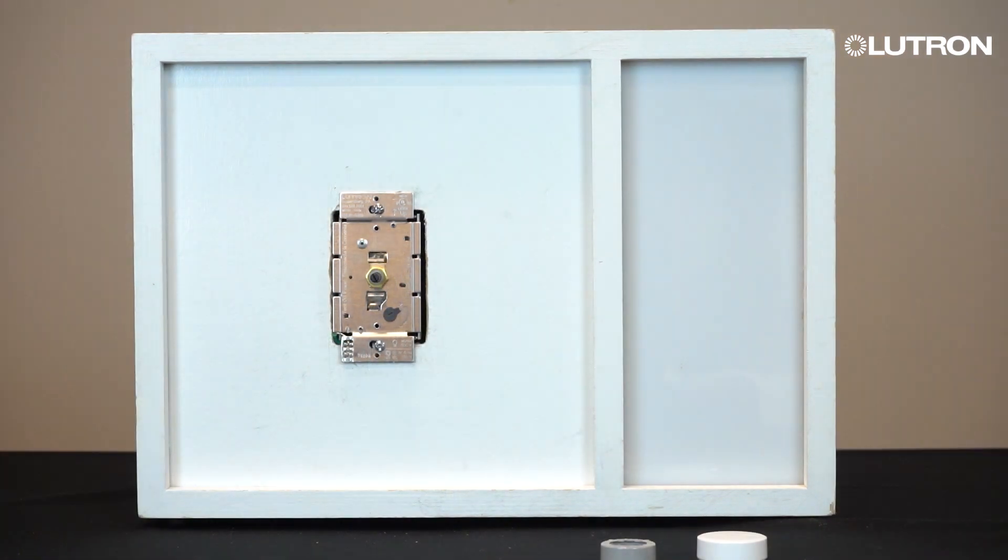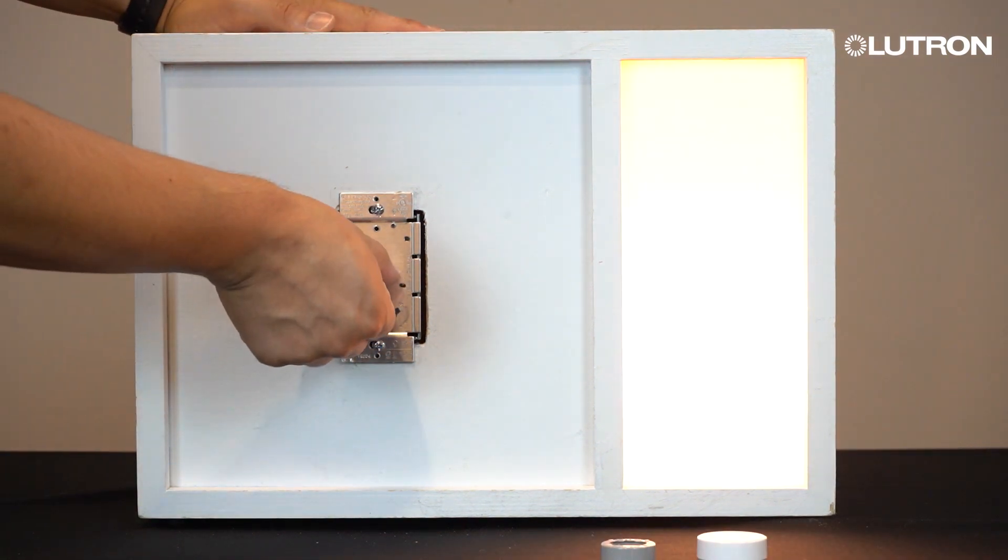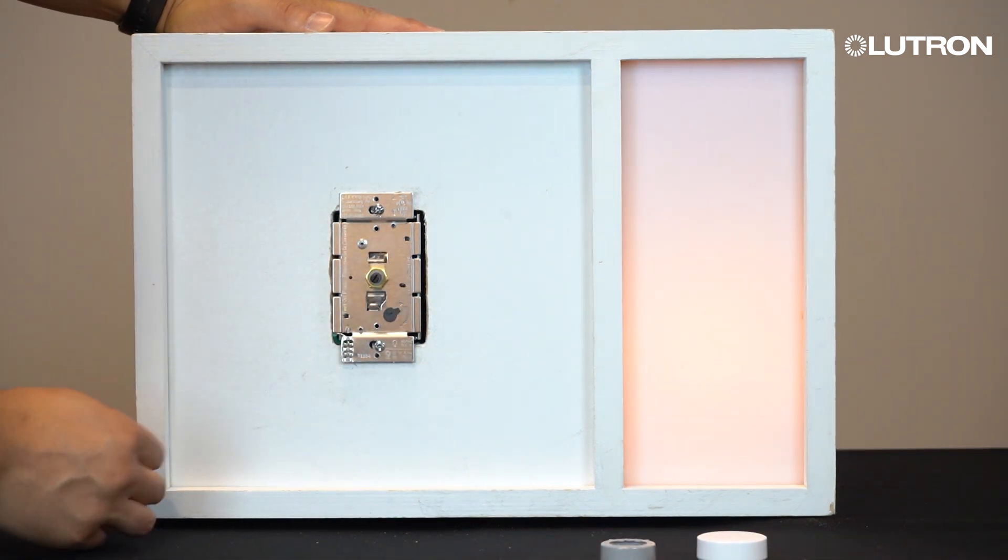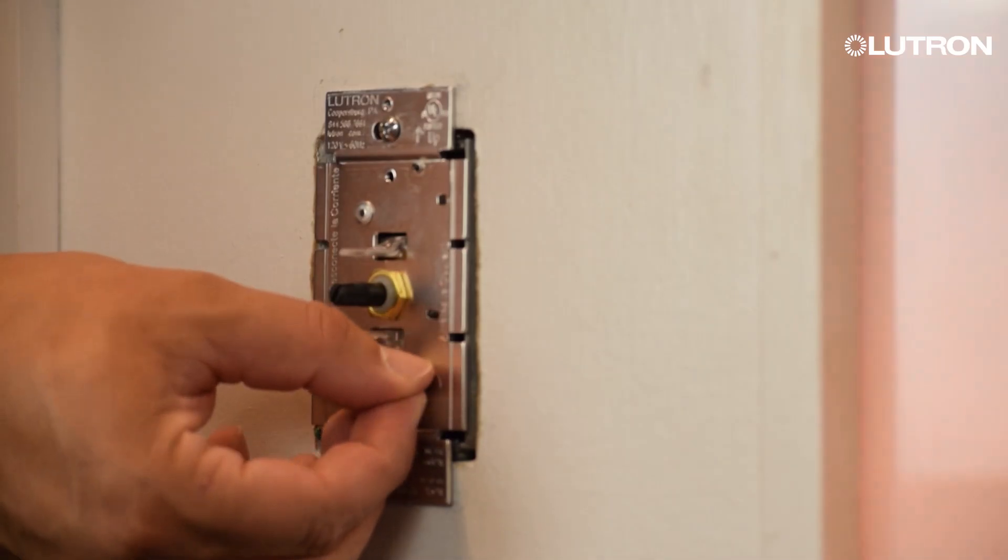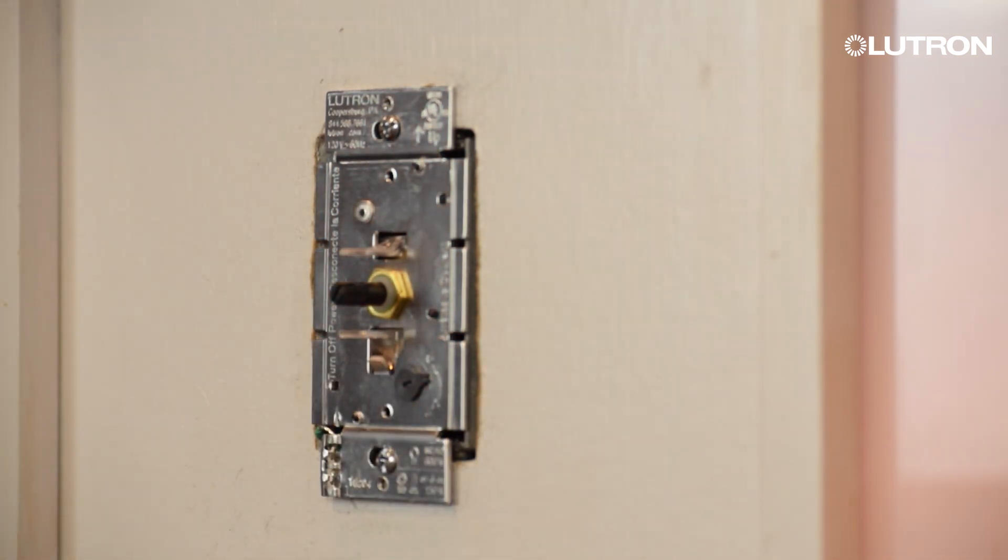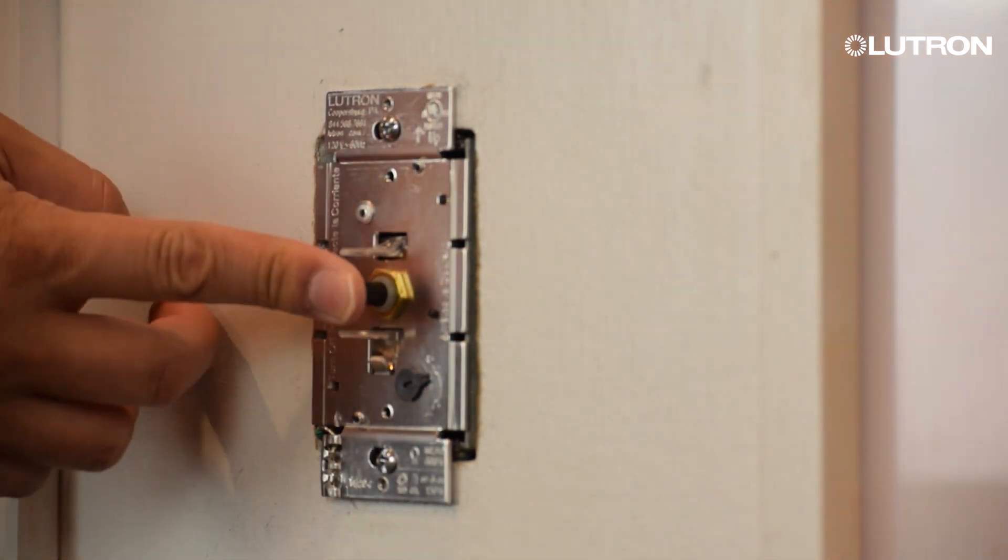Once the dimmer has been attached to the wall box, take this opportunity to adjust the low-end trim. Turn the power back on at the circuit breaker and then turn your lights on to their lowest level by turning the shaft counter-clockwise. You can now adjust the low-end trim of the dimming range with the black or blue dial to reduce any flicker or dropout the bulb may experience at low levels.